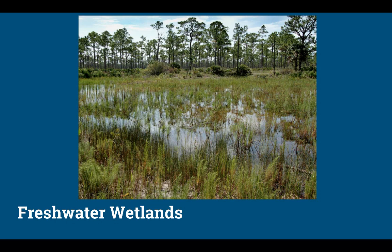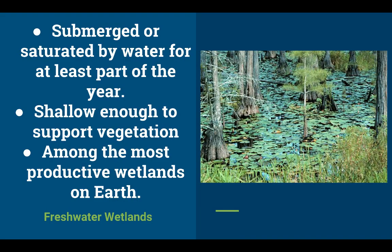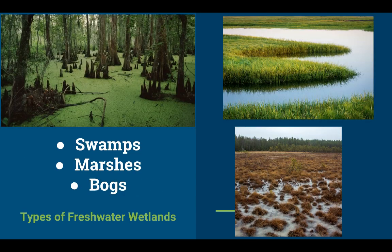Moving on to freshwater wetlands — these are areas with standing water that are saturated for at least part of the year. They are very shallow, so vegetation can exist. It's important to point out that these are some of the most productive areas on Earth in regards to life and sustainability. There are three types we'll look at, with minor differences between them.